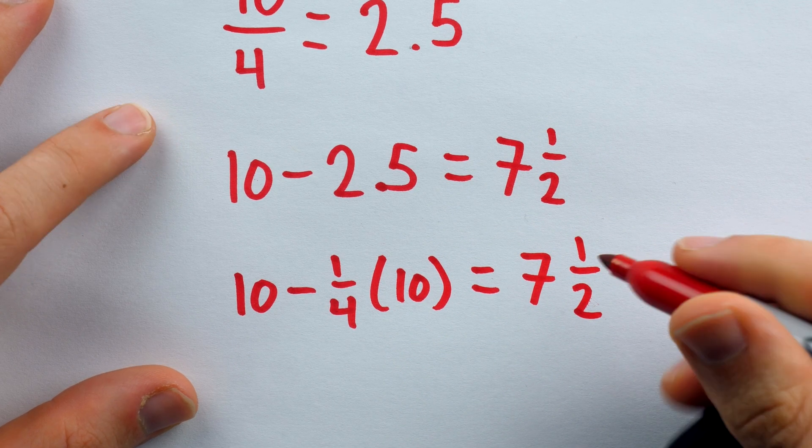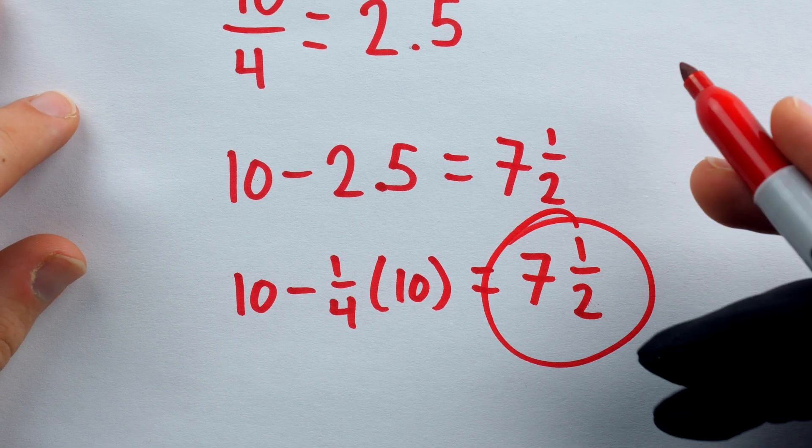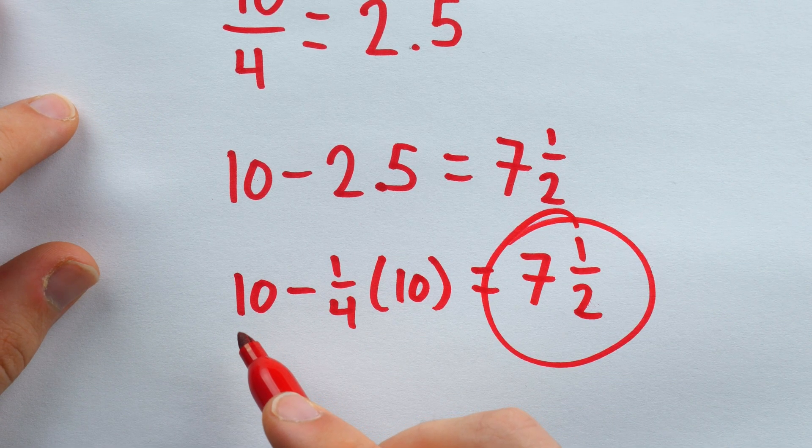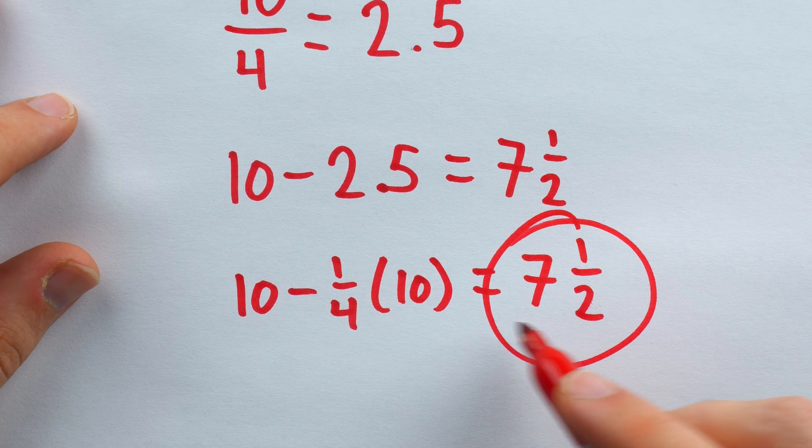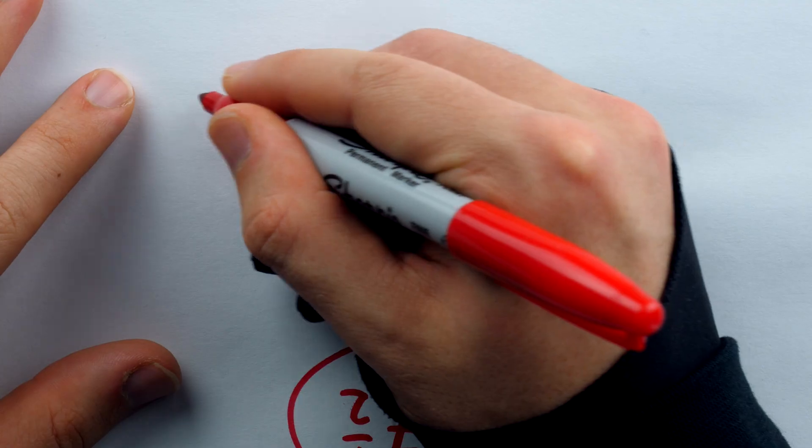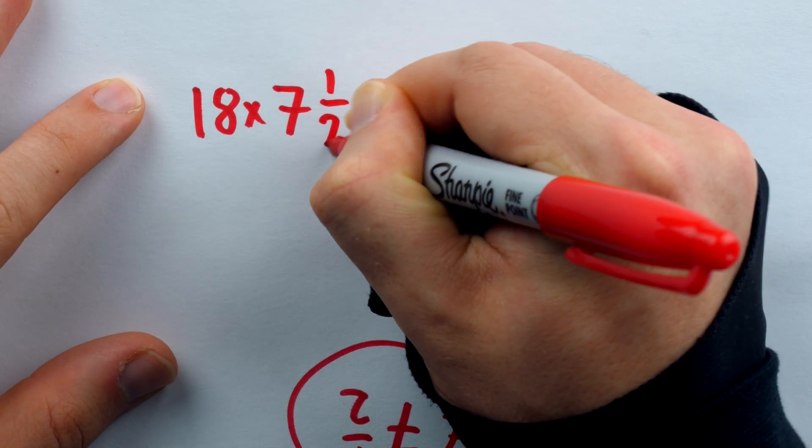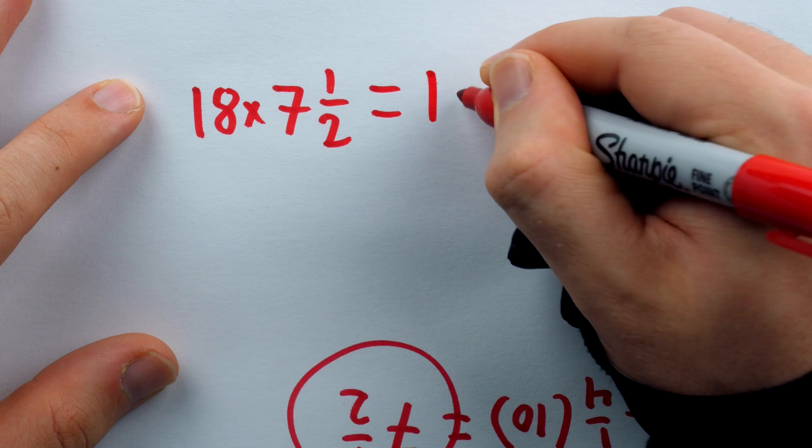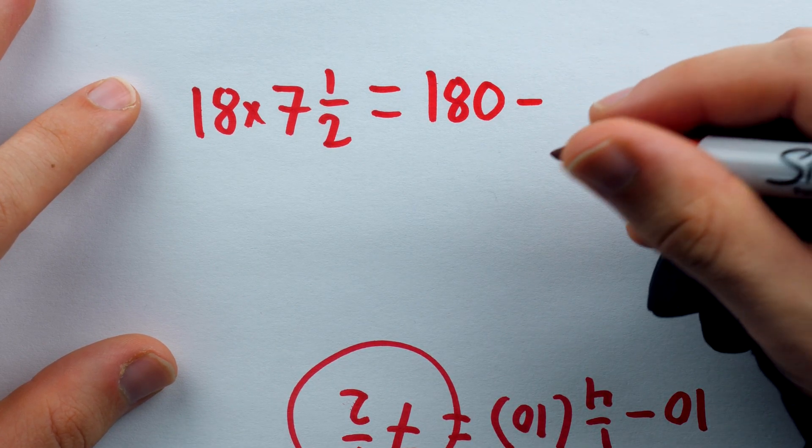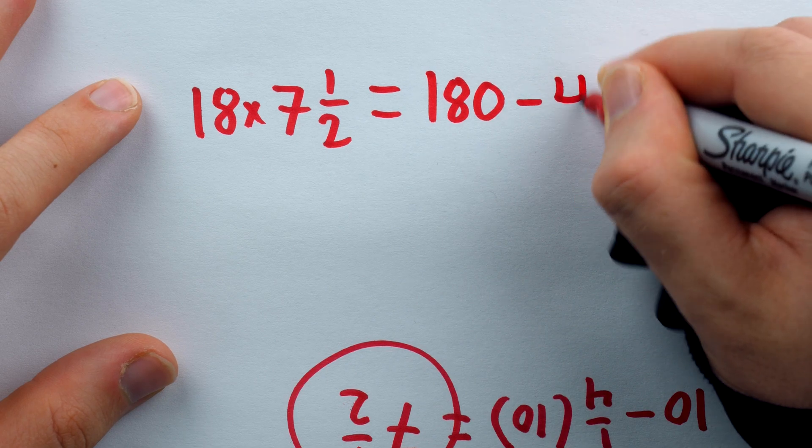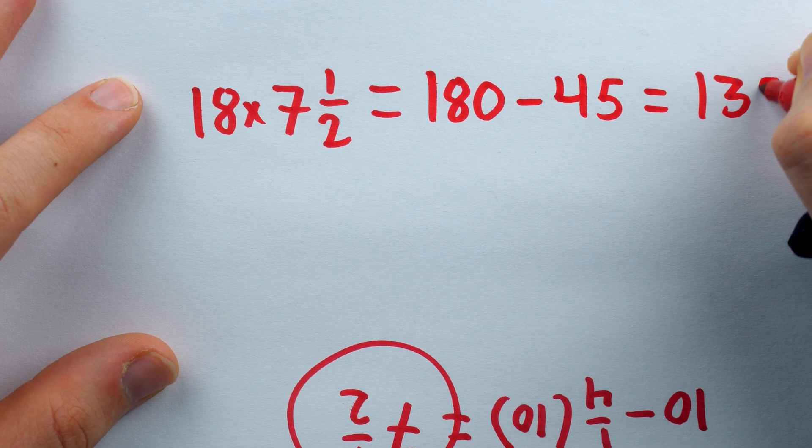So if we want to multiply something by 7 and a half, all we really need to do is multiply it by 10, and then take away a fourth. Going back to the example of 18 times 7 and a half, a very quick way to do this is to just say, well, 18 times 10 is 180, and a fourth of 180 is 45. So just subtract 45, and thus our final answer is 135.